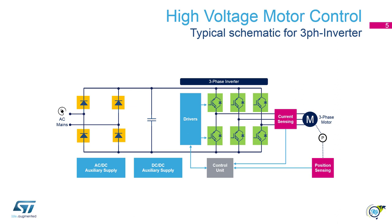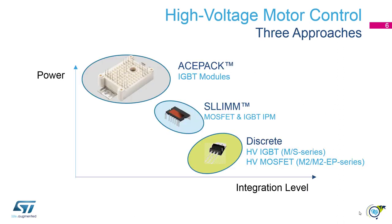In this typical schematic of a three-phase inverter we see the blocks from the previous slide now put into circuitry. For instance, we see on the left side a single-phase mains input using four diodes. In the center in blue we have the drivers. On the right side in green we have the output stage using IGBTs. In ST we have three approaches to form this output stage.